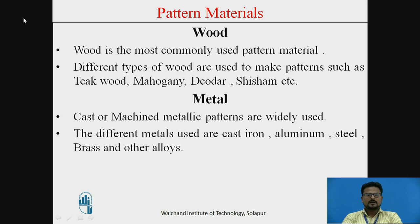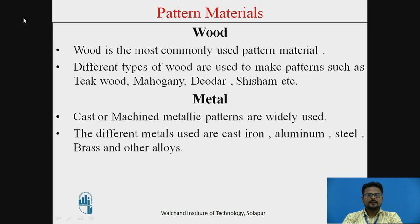The next material is Metal. Cast or machined metallic patterns are widely used in making patterns. Metallic patterns are suitable for producing castings in large quantities and repetitive production. They give good surface finish and are dimensionally more accurate. The different metals used are cast iron, aluminium, steel, brass, and other alloys.